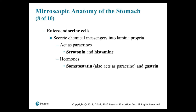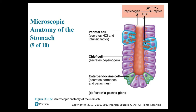Gastrin stimulates secretion by both parietal and chief cells, as well as contractions of the gastric wall that mix and stir gastric contents. Somatostatin is a hormone that inhibits the release of gastrin. To summarize: the parietal cell secretes hydrochloric acid and intrinsic factor. HCl activates pepsinogen into pepsin, and pepsin then activates more pepsinogen in a positive feedback mechanism. The chief cell secretes pepsinogen, and the enteroendocrine cell secretes hormones and paracrines.